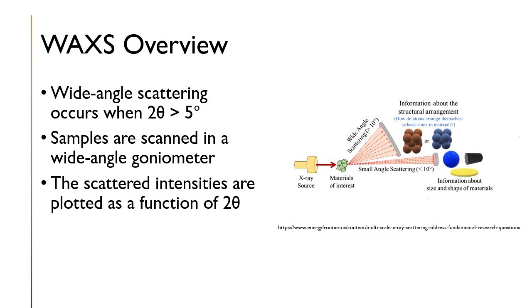While diffraction can occur at any 2θ position, wide-angle X-ray scattering specifically occurs when 2θ is greater than 5 degrees. Samples for this are scanned using a wide-angle goniometer, and the scattered intensities are plotted as a function of 2θ.